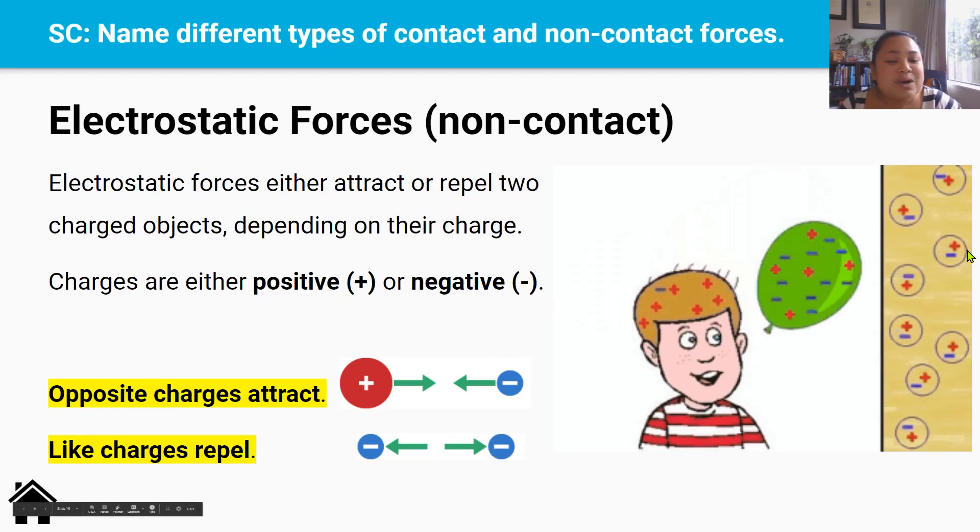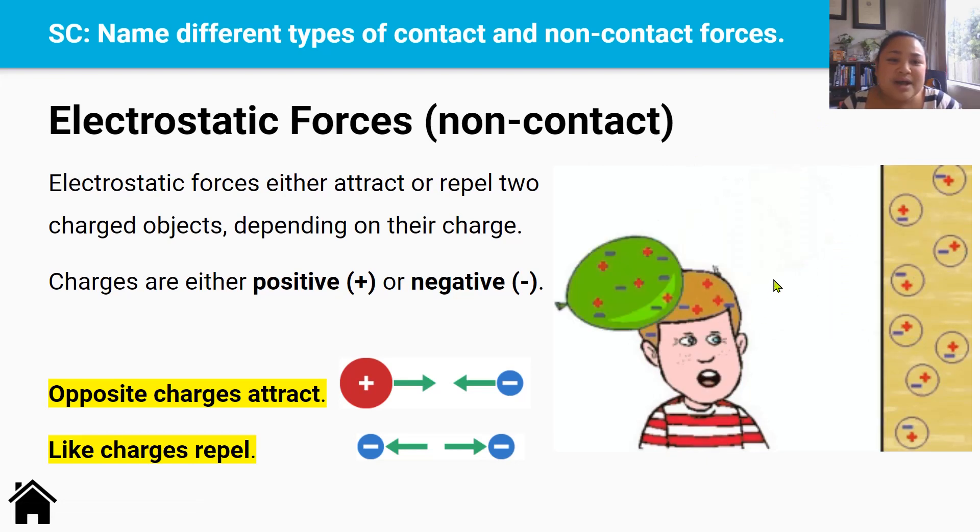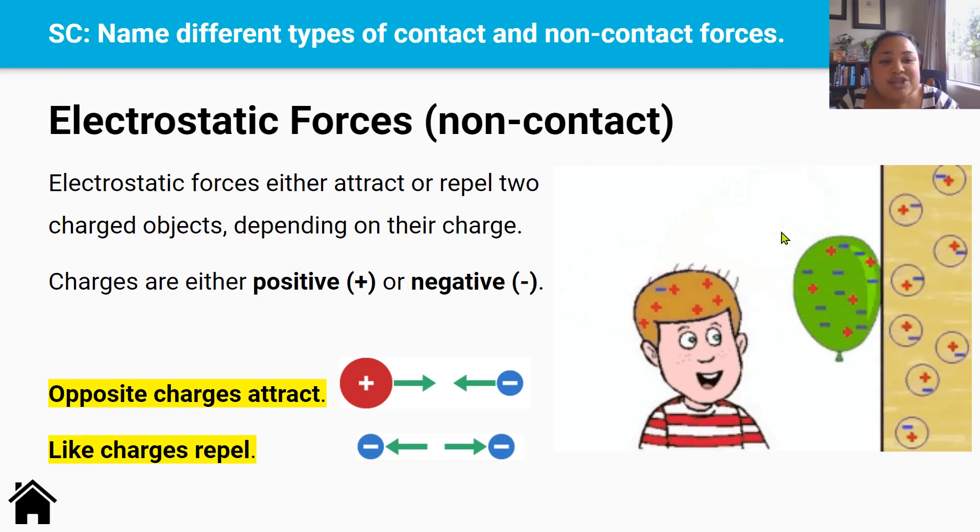Now you're probably wondering what's this all about? Well, have you ever seen anyone rub a balloon on their head and then the balloon sticks to the wall? That's because when you rub the balloon on your head or on a piece of clothing, especially wool, you are accumulating charges on the balloon. And that is attracted to the charges on the wall. We'll learn more about electrostatic forces in the electricity topic in physical world.